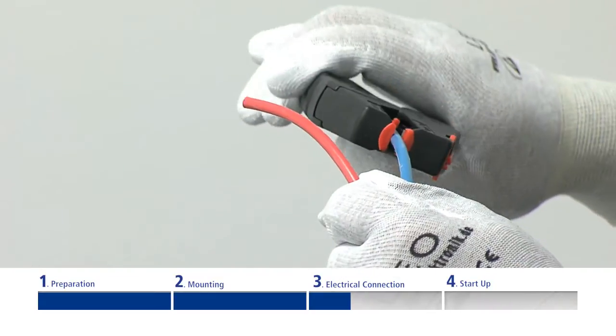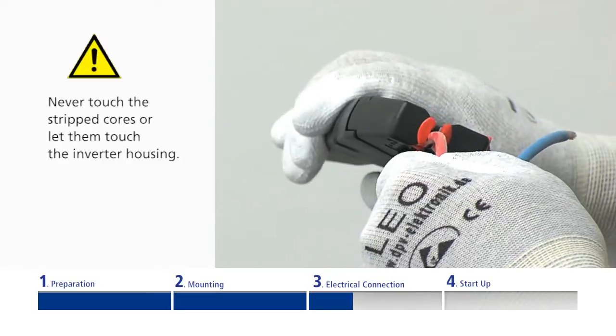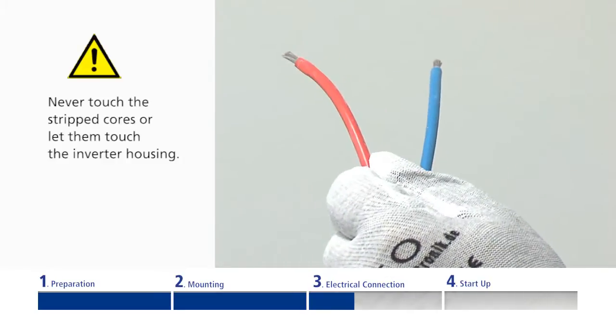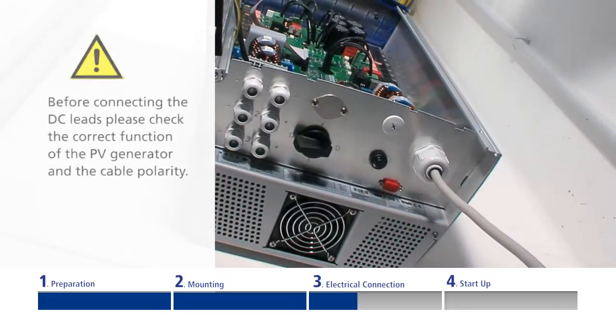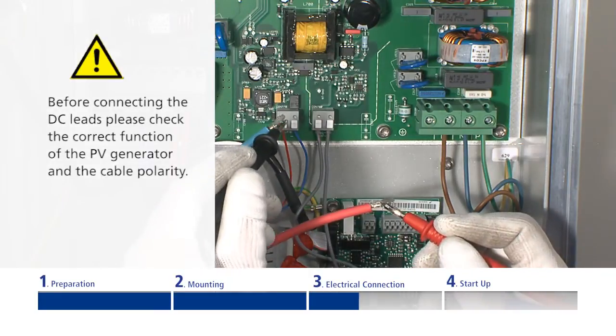Afterwards, the DC lead of the PV generator is connected. Ensure that the integrated DC disconnector is switched to the off position. Check the polarities with a measuring gauge.